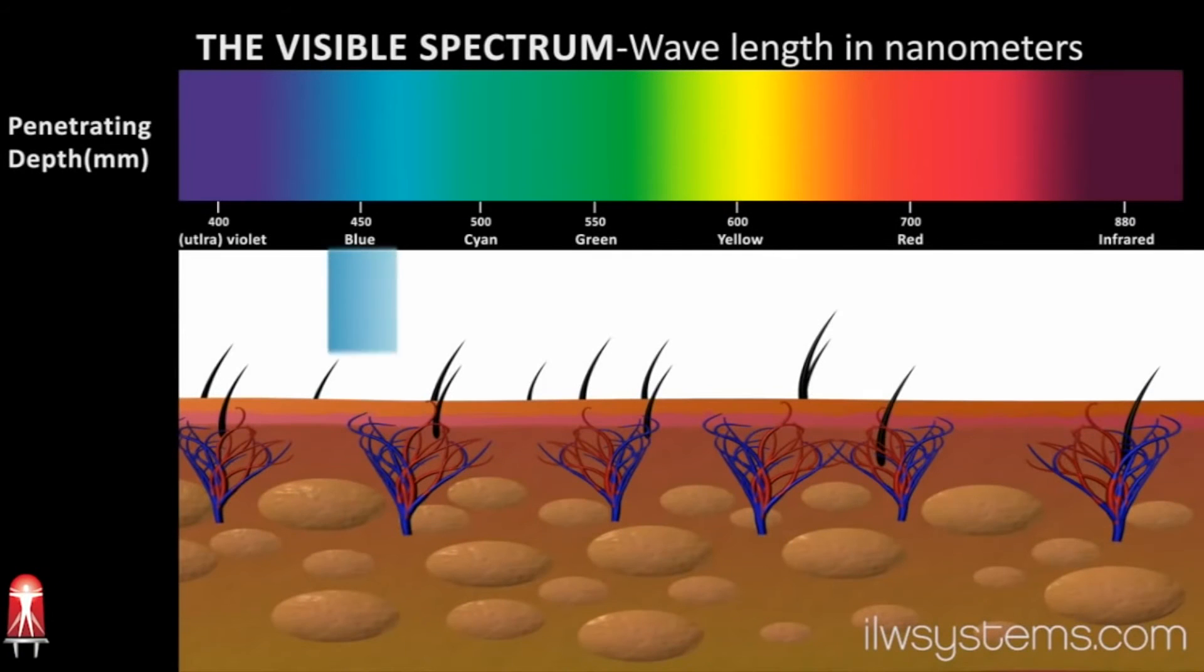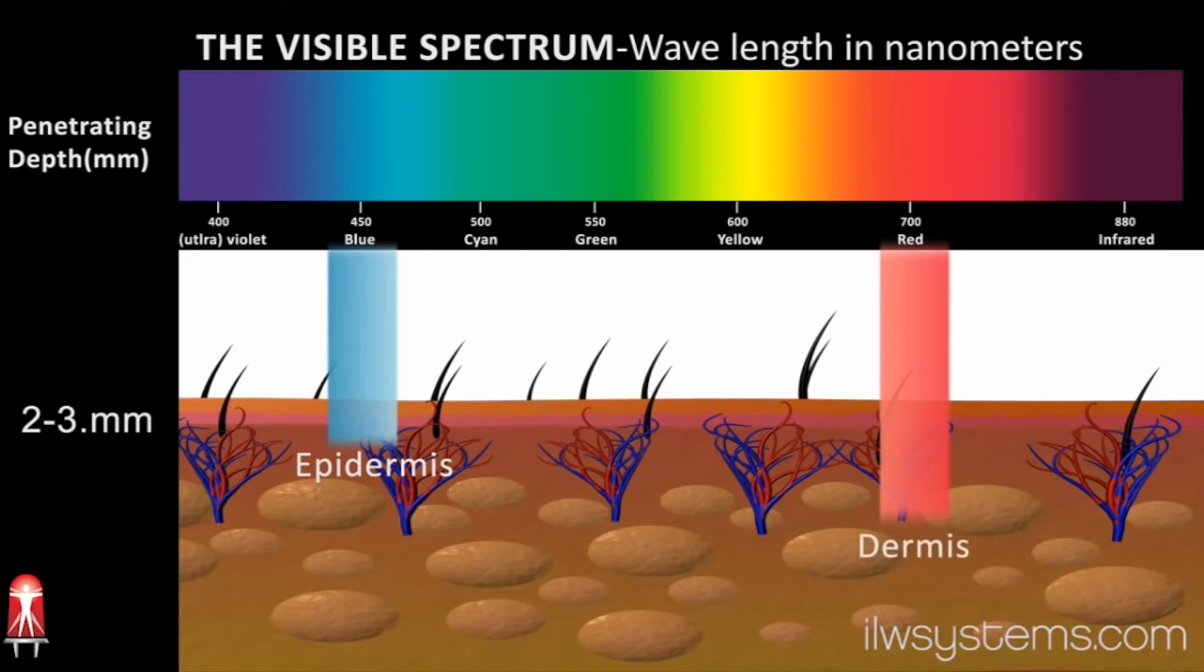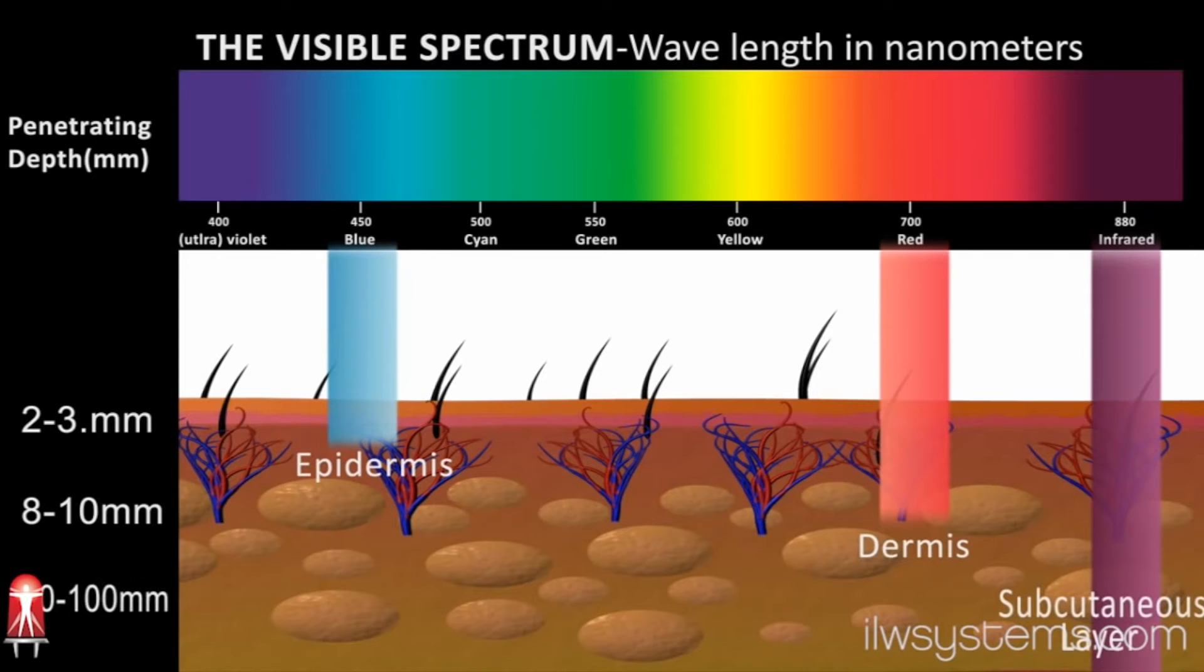Light near the blue end of the spectrum penetrates about 2 to 3 millimeters. Light at the red end of the spectrum penetrates about 8 to 10 millimeters. And near-infrared light penetrates about 20 to 100 millimeters.